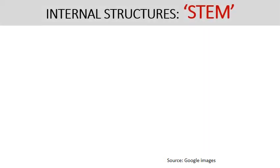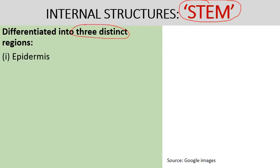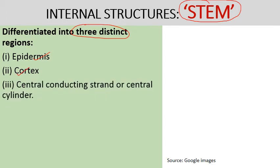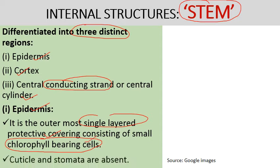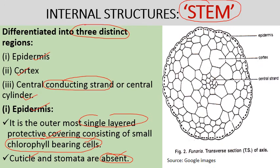Next comes the internal structures. The stem structure shows three distinct regions. The outermost is the epidermis, which is a single layer that covers the cortex, and finally the central conducting strand which consists of thick-walled cells forming the central cylinder. The epidermis is the outermost single-layered protective covering which consists of small chlorophyll-bearing cells and also contains chloroplasts.